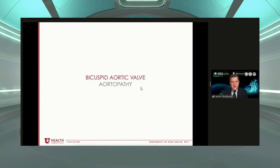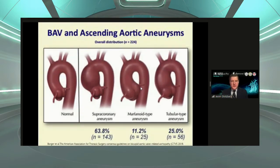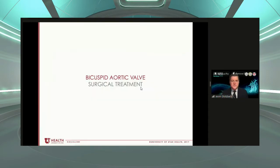I want to mention aortopathy because you cannot separate these two clinical entities. Anyone with a bicuspid valve is at significant risk for developing an aortic aneurysm, typically in the aortic root or ascending aorta, associated with significant morbidity and mortality due to the risk of aortic dissection. Any patient with a bicuspid aortic valve should be screened for aortic aneurysm. There are three main morphologic subtypes: most common is the supracoronary or isolated ascending aneurysm; about 10 to 11% have a root phenotype, which is thought to be more aggressive; and some patients have both.